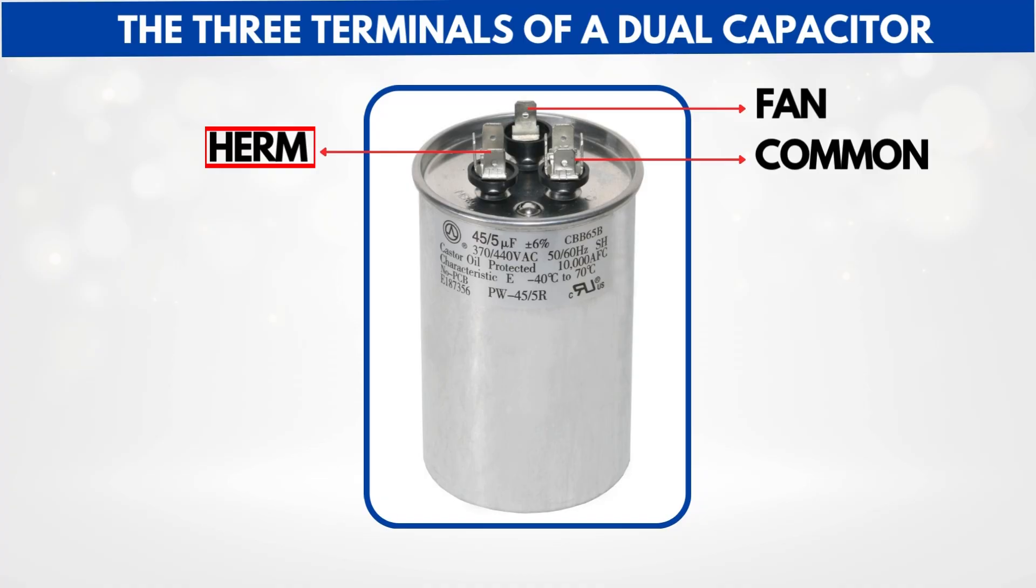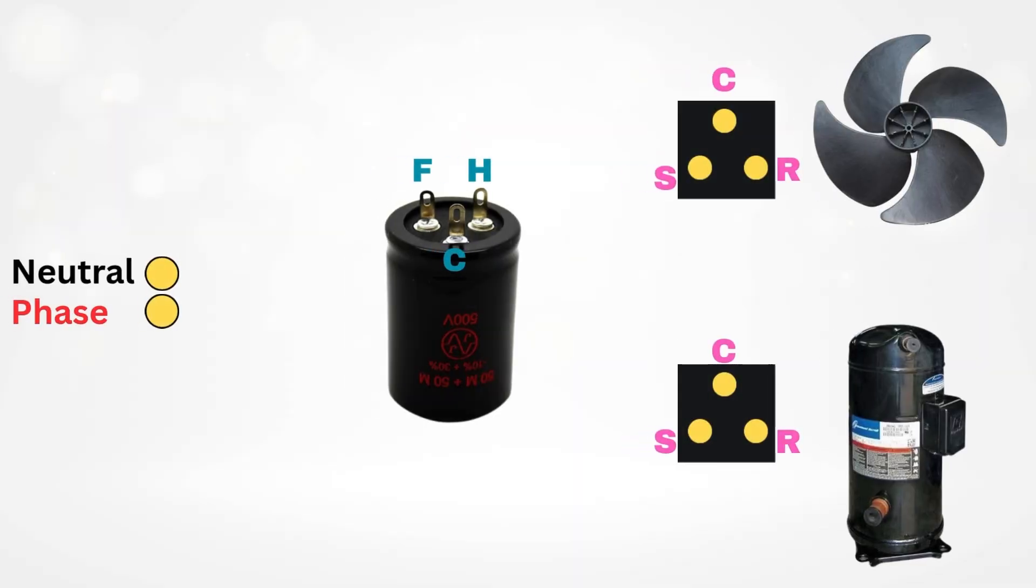These terminals are usually marked right on top of the capacitor casing as C, fan, and Herm. Let's go step by step through the wiring of this capacitor in an AC unit.